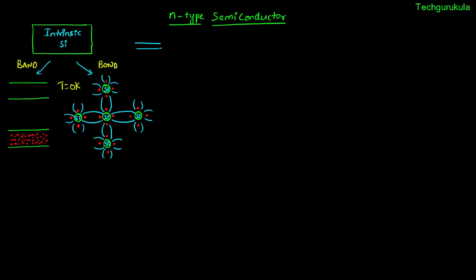Now I am going to add some impurities or dopants to this intrinsic semiconductor in a controlled way. This process of adding impurities in a controlled way is called doping. So basically we are doing doping to this intrinsic semiconductor with an impurity — we are choosing here arsenic.